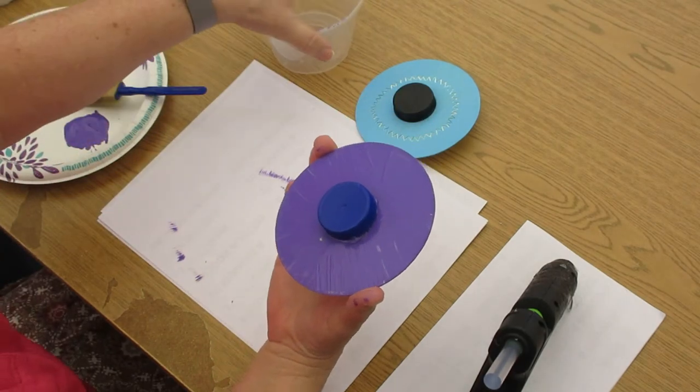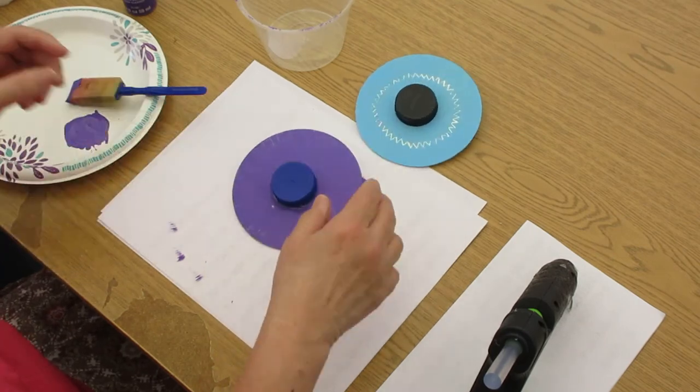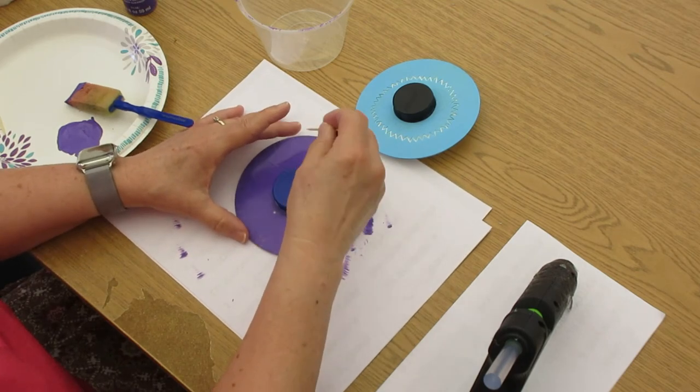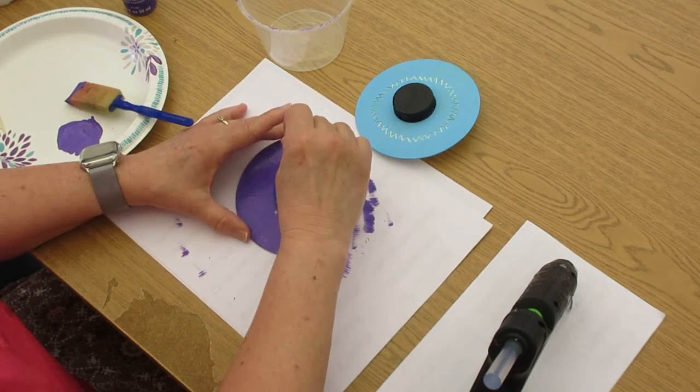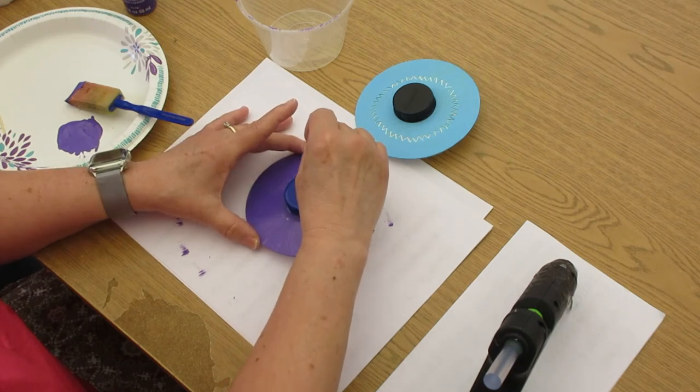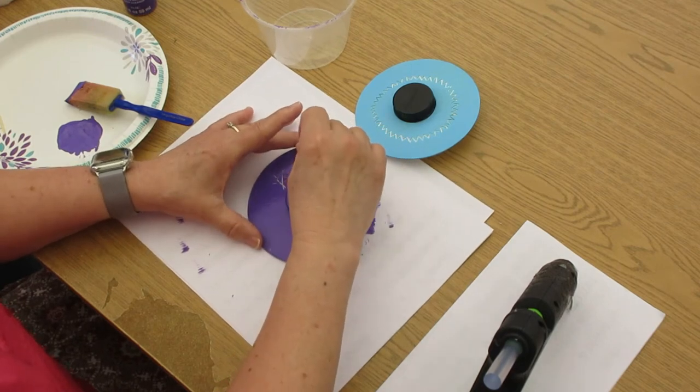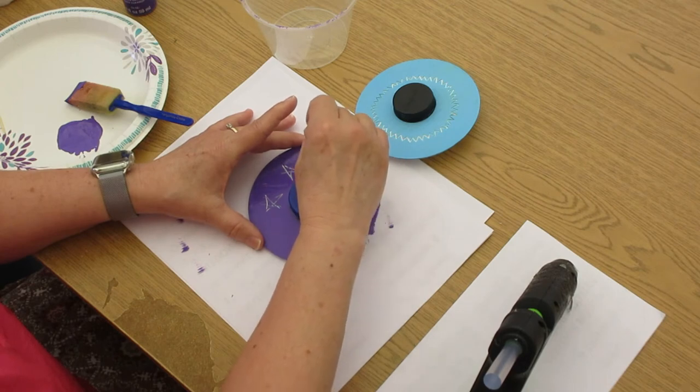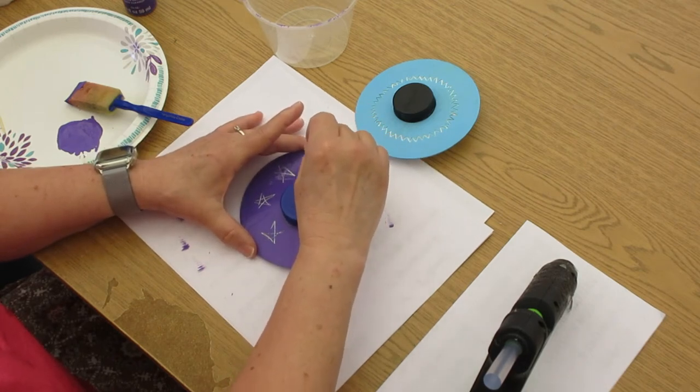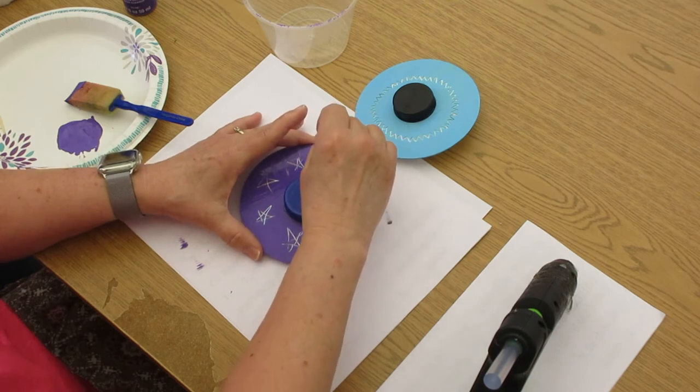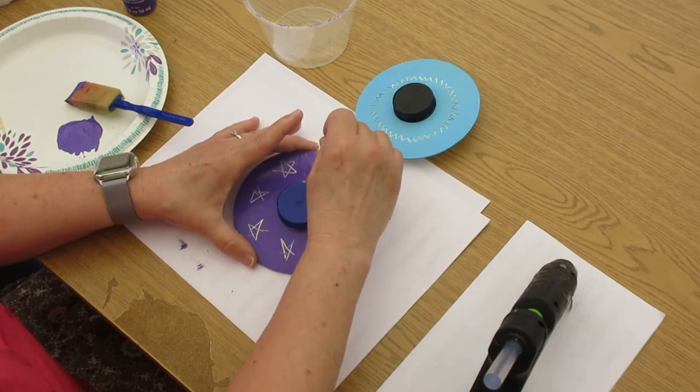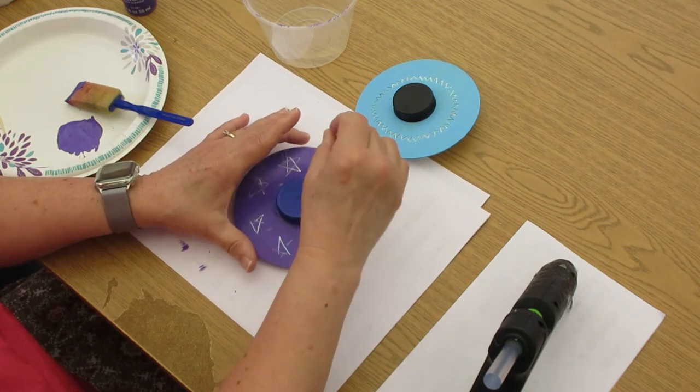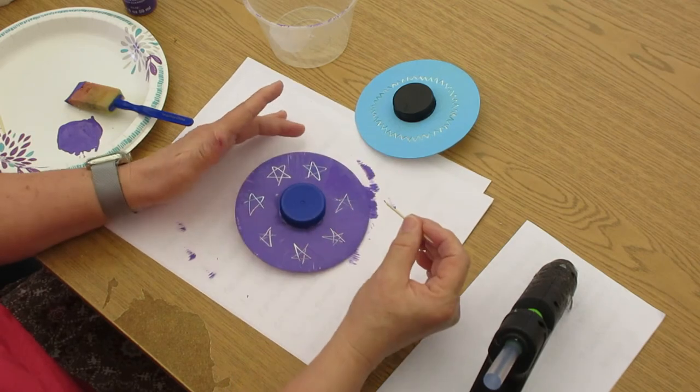What you're going to do now, you're going to take your toothpick, paint's completely dry, and you're going to make designs in your CD. I'm going to make stars. Let's see how that works. All the way around. You can make any design you want on yours. Because the real cool thing is when you spin it, you can see what you've done.